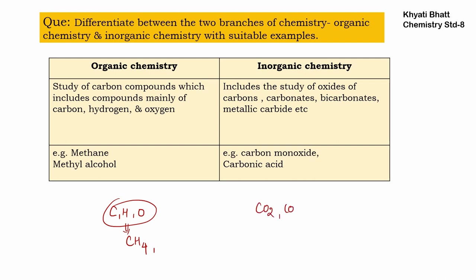Inorganic chemistry includes the study of oxides of carbon, for example carbon dioxide and carbon monoxide. Then carbonates (CO3), bicarbonates (HCO3 and H2CO3). All the acids — hydrochloric acid, sulfuric acid, and nitric acid — also belong to inorganic chemistry. Examples include carbon monoxide and carbonic acid (H2CO3).